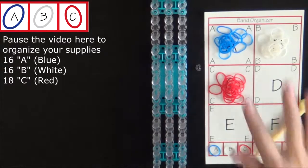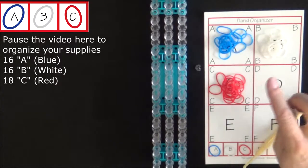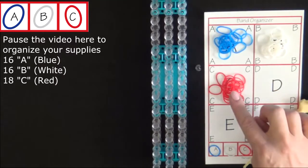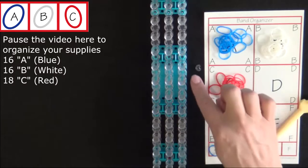To make this bracelet you will need 16 A colored bands, 16 B colored bands, 18 C colored bands, and a C-clip.